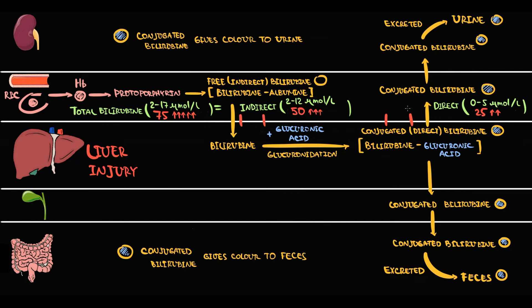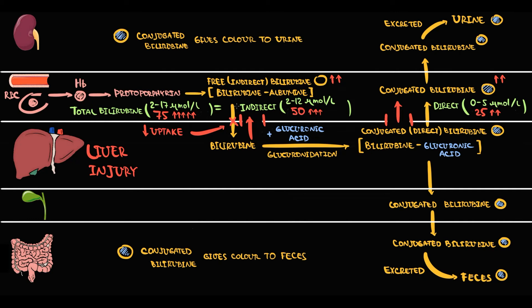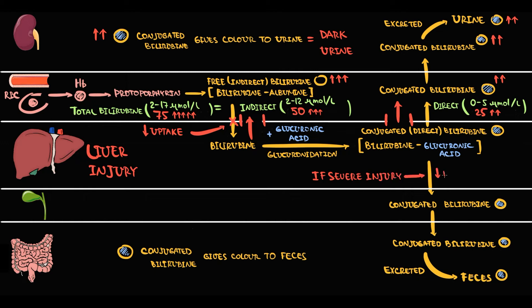With damage to hepatocytes, hepatocytes die and their inner content is released into the blood, so both free bilirubin and conjugated bilirubin enter the bloodstream and their levels increase. Additionally, with liver damage, the uptake of free bilirubin becomes impaired, causing further increase in free bilirubin. The higher the concentration of conjugated bilirubin in the bloodstream, the higher the excretion of bilirubin, causing dark urine. But with liver damage, excretion of bilirubin into the bile becomes impaired, so the concentration of bilirubin in the feces decreases, causing slight discoloration of the feces.